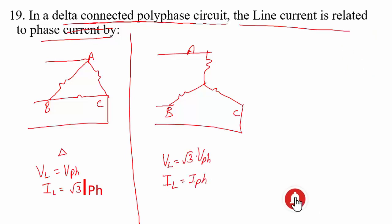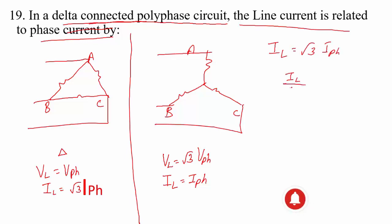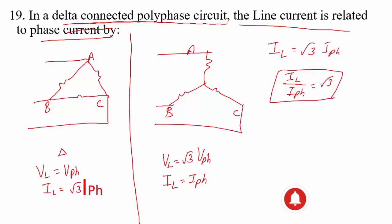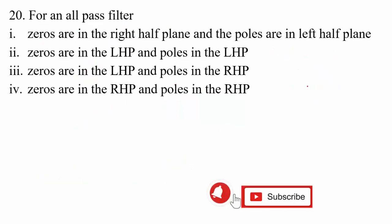Based on this theory, for a delta-connected circuit, the line current is related to √3 times the phase current — that is, I_L / I_phase = √3.